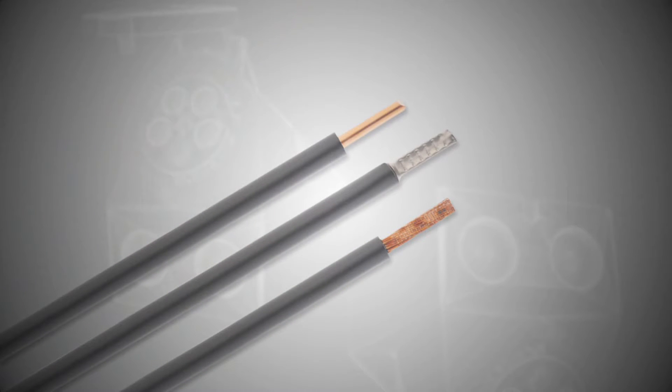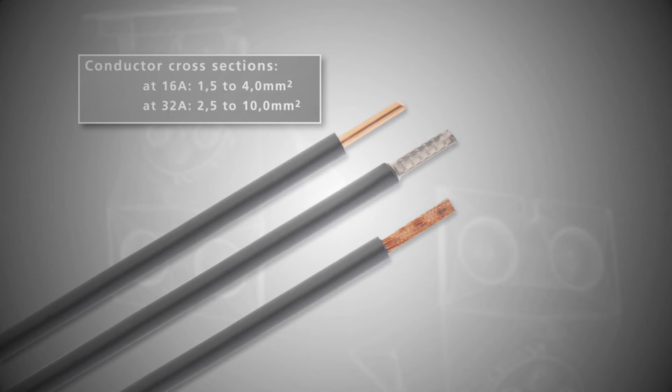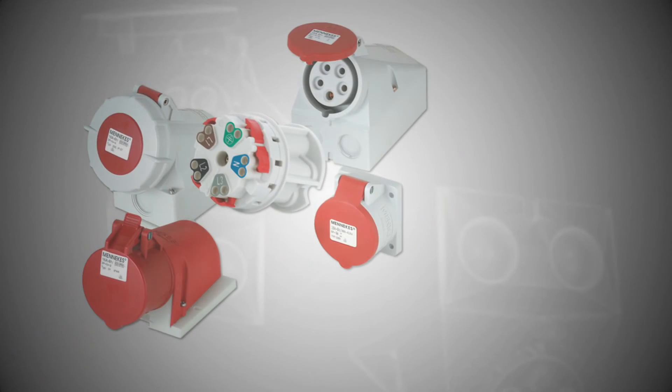Conductor cross sections at 16 amps, 1.5 to 4 square millimeters. At 32 amps, 2.5 to 10 square millimeters.